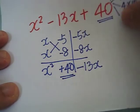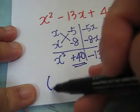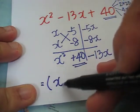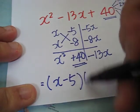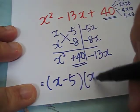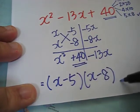Therefore, when factorized, we will get (x - 5), which is here, and this one, (x - 8). Answer.